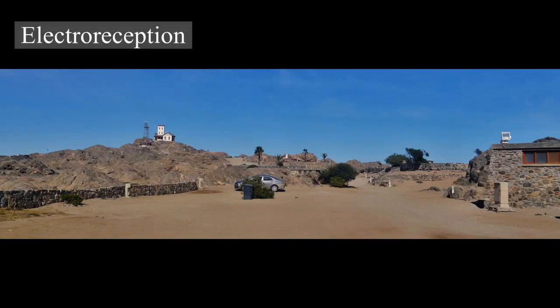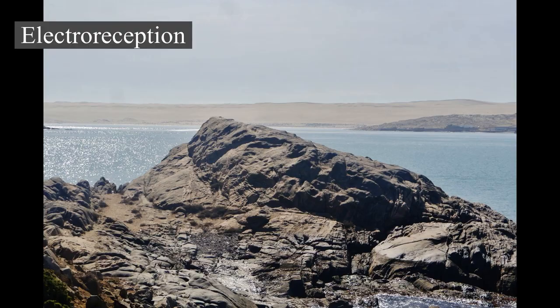The ampullae of Lorenzini are the electroreceptor organs, numbering in the hundreds to thousands. Sharks use the ampullae of Lorenzini to detect the electromagnetic fields that all living things produce. This helps sharks — particularly the hammerhead shark — find prey. The shark has the greatest electrical sensitivity of any animal. Sharks find prey hidden in sand by detecting the electric fields they produce. Ocean currents moving in the magnetic field of the earth also generate electric fields that sharks can use for orientation and possibly navigation.